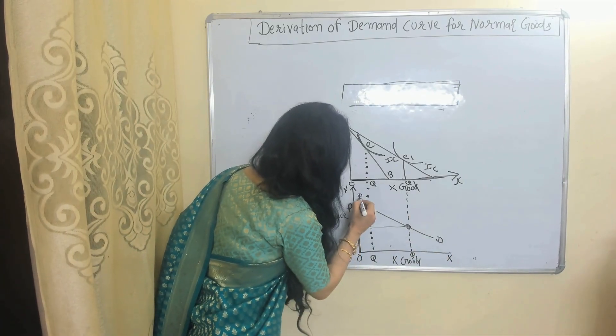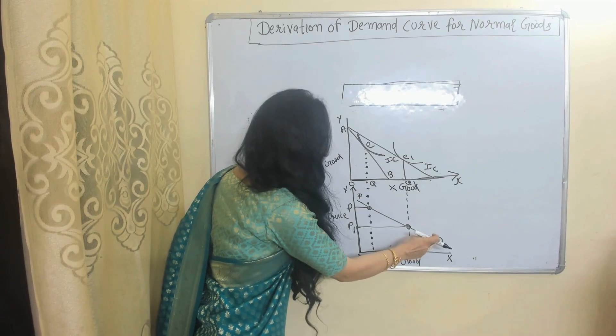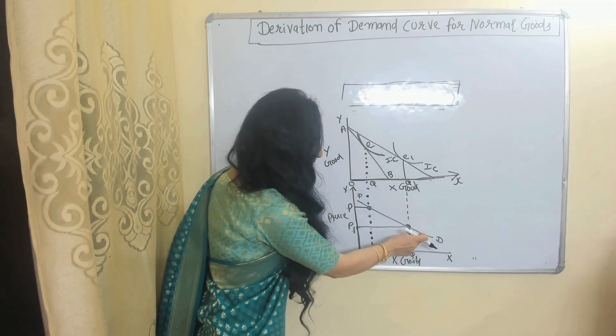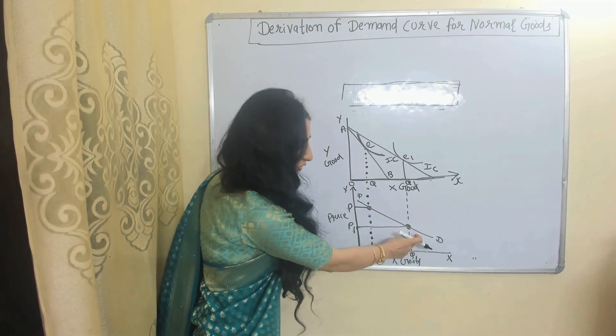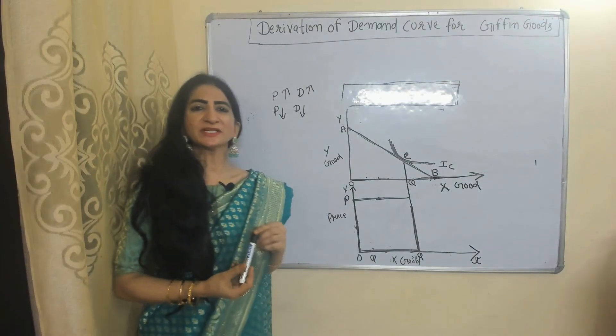When we join these two points, the resulting curve DD is called the demand curve in case of normal goods.